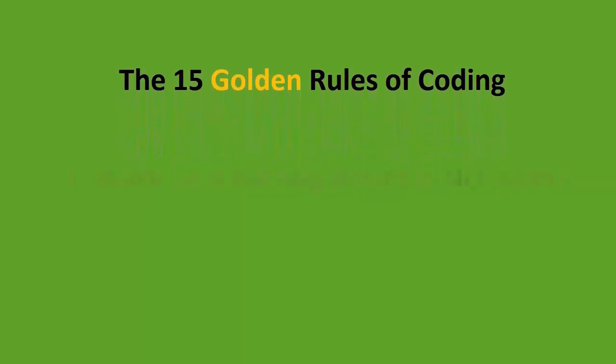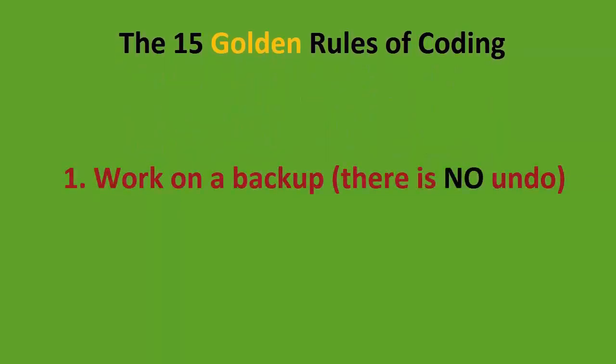Number one: work on a backup — there is no undo. When you work in Excel, if you make a mistake you have the comfort of hitting the undo button. Not so when you make a change using code. There is no undo; all you can do is close your file without saving and reopen it. The drawback is that any work you did is lost, so always work on a backup.